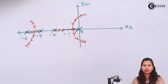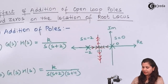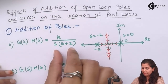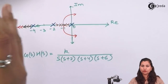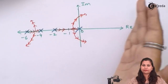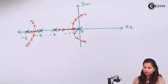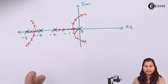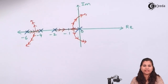So this is how the root locus location is changing when we are adding poles in the denominator. If we see the three root loci: this was the first root locus when we had s(s+2) with two poles. Then when we had three poles, the root locus shifted towards the imaginary axis or towards the right hand side. And when we added another pole, it again shifted towards the imaginary axis or towards the right hand side. So we can say that due to the addition of poles, the root locus is shifting towards the right hand side of the s-plane.